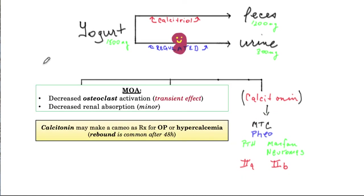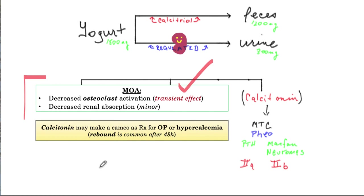This information is extremely low yield, but should they ask about the mechanism by which calcitonin lowers serum calcium: it is by decreasing osteoclast activation. That is the mechanism, and it is a transient effect. It also decreases renal absorption — less important. Calcitonin may be listed as an acute treatment for hypercalcemia, but rebound is common after 48 hours, and there are other therapies.